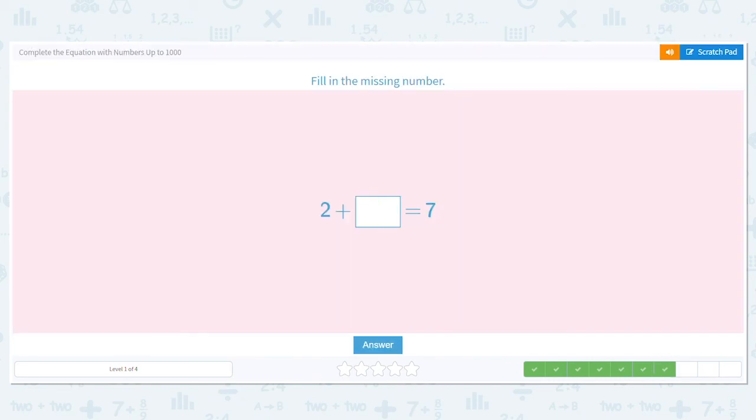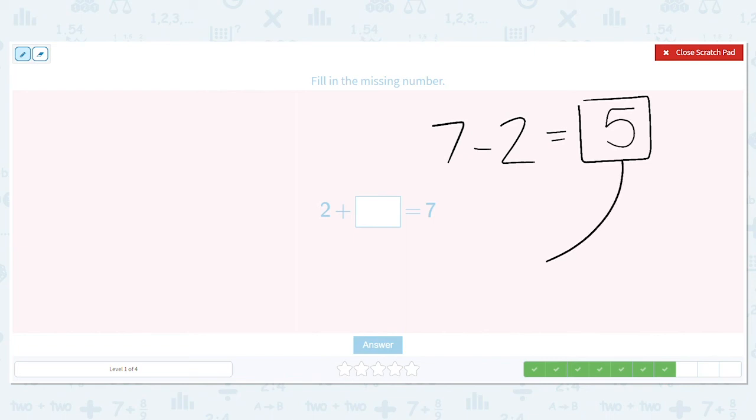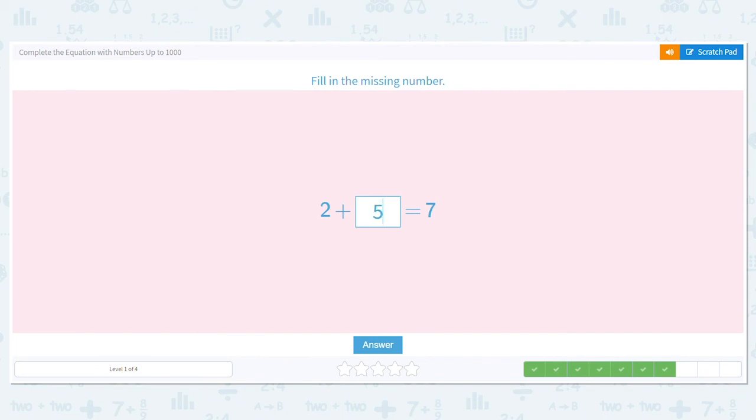Next, 2 plus blank equals 7. Still missing the second number. So I should be able to do 7 minus 2. What is 7 minus 2? It's 5. So that means, what goes in this box? 5. And let's check. Is 2 plus 5 equal to 7? It is. So we put 5 there.